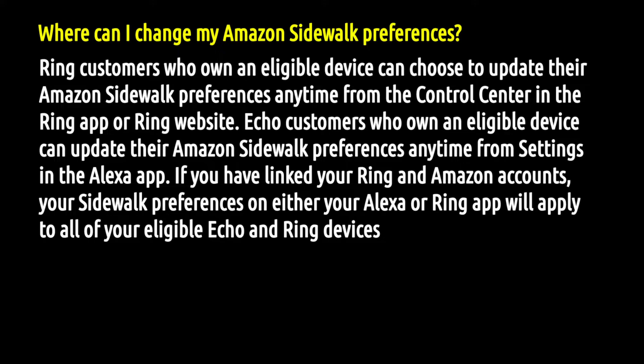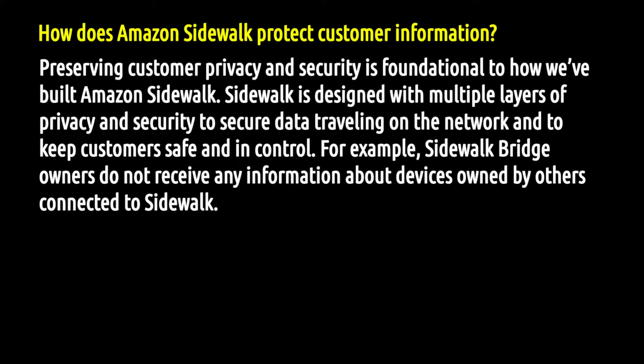The next question is: where can I change my Amazon Sidewalk preferences? For Ring customers with a Sidewalk-enabled device, you can update your Sidewalk preferences anytime from the control panel in the Ring app or the Ring website. For Echo customers, you can update preferences from the settings in the Amazon voice assistant app. If you've linked your Ring and Amazon accounts, your Sidewalk preferences on either app will apply to all your eligible Echo and Ring devices.